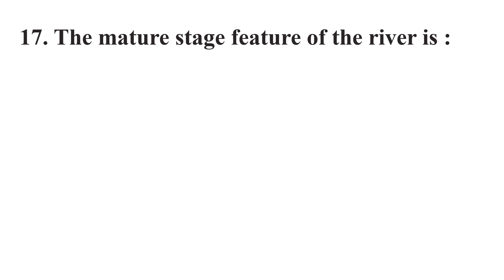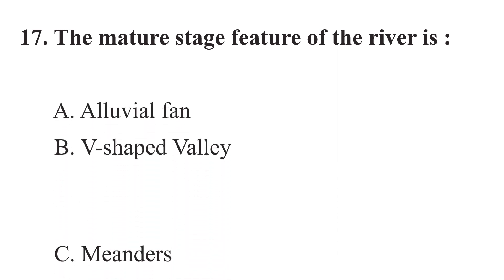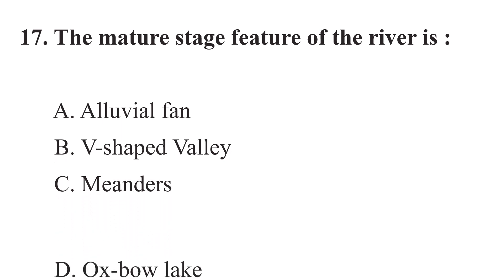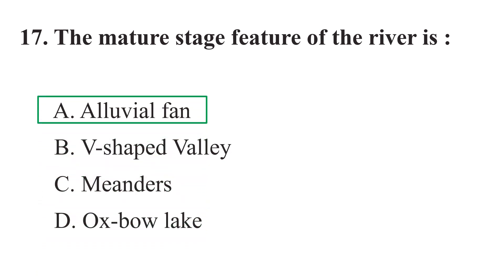Question 17: The mature stage feature of a river is: A) Alluvial fan, B) V-shaped valley, C) Meanders, D) Oxbow lake. The correct answer is A) Alluvial fan.